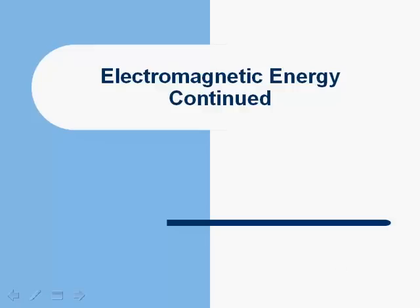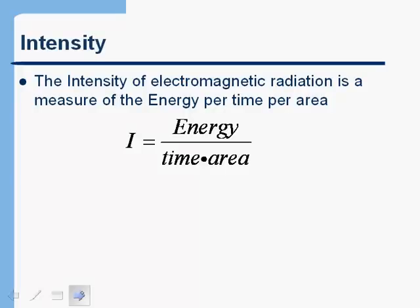This week we're going to continue discussing electromagnetic energy. The first thing we want to talk about today is intensity. Your book uses the term intensity but doesn't really define it, so I want to talk about what intensity is and why it's an important thing to understand for radiologic technologists. The intensity of electromagnetic radiation is a measure of the energy per time per area.